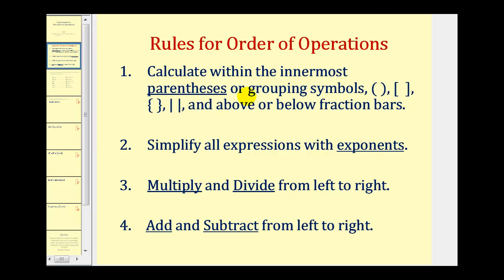Step one is to calculate within the innermost parentheses or grouping symbols. Step two is to simplify all expressions with exponents. Step three is to multiply and divide from left to right — it's important to note that these two have the same priority, so we just multiply and divide as they occur from left to right. And then step four, we add and subtract again from left to right. These two also have the same priority.